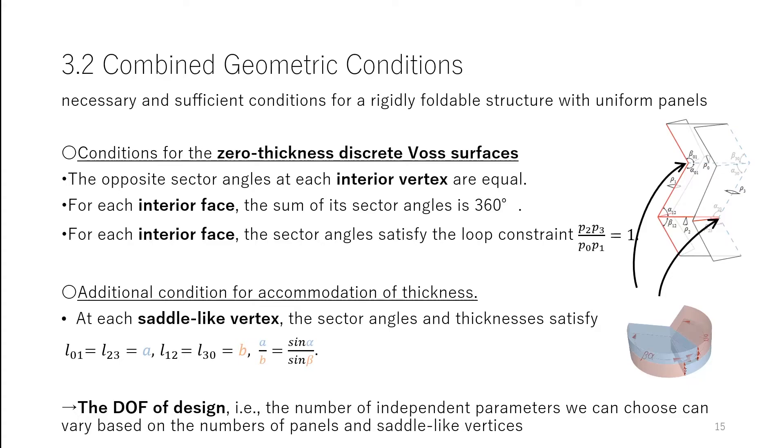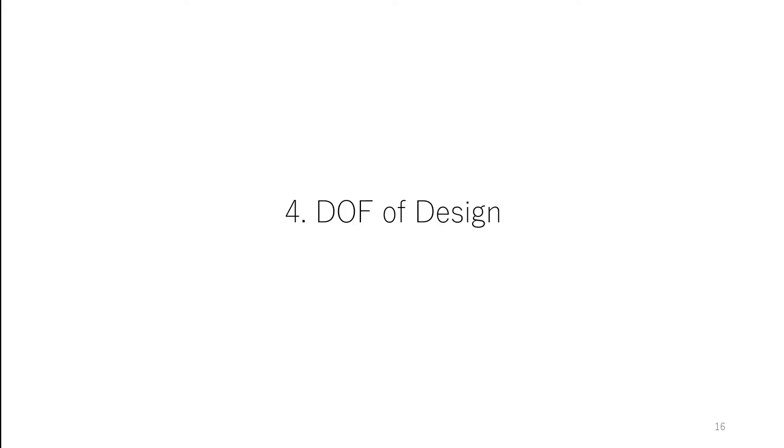We call the number of independent parameters we can choose the DOF of design. It can vary based on the numbers of panels and saddle-like vertices. We then use the DOF of design to evaluate the surface and explore the variety of forms that can be achieved.